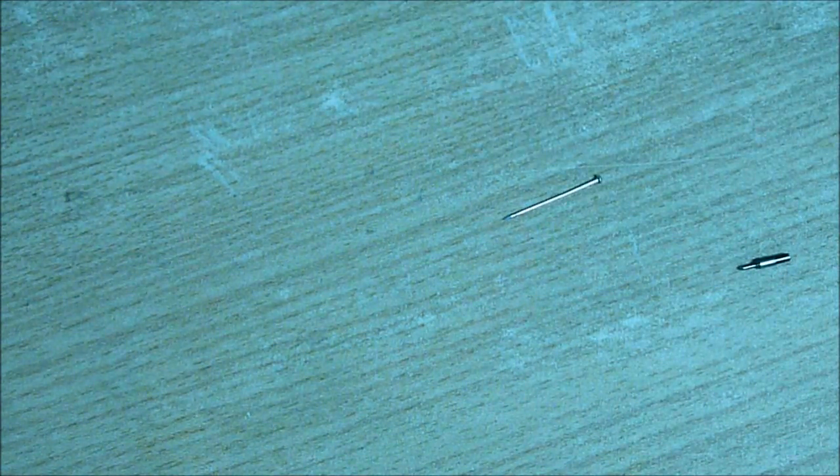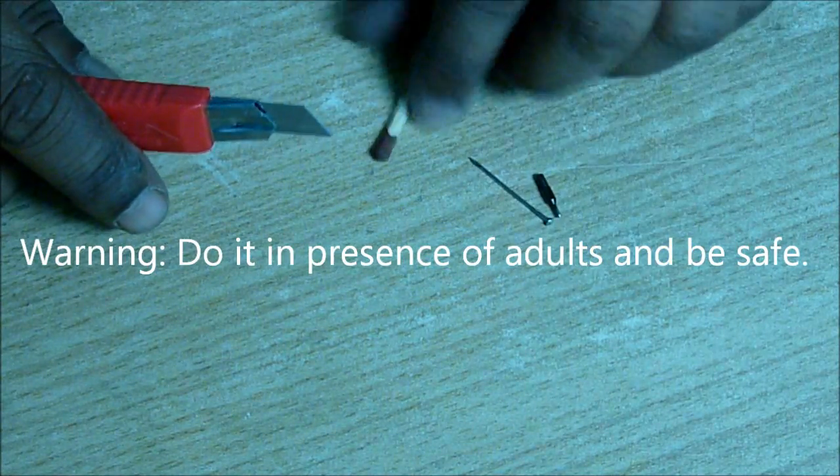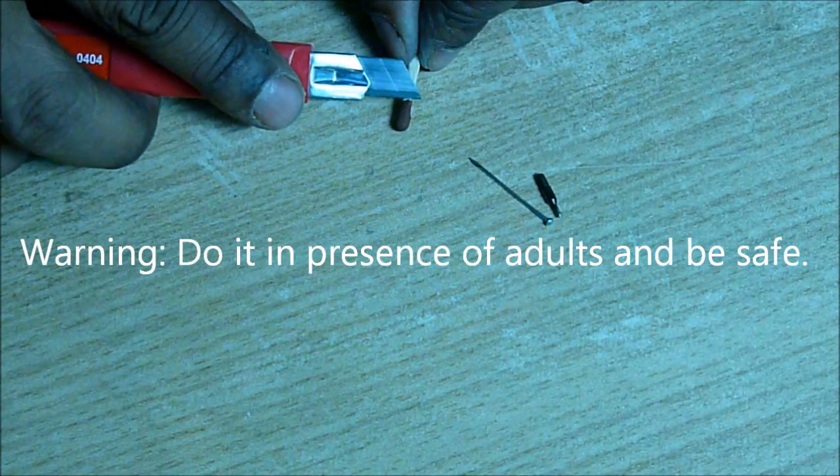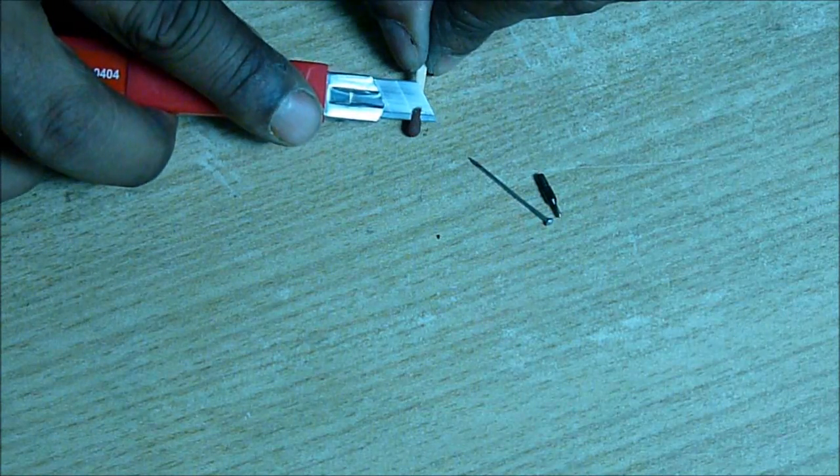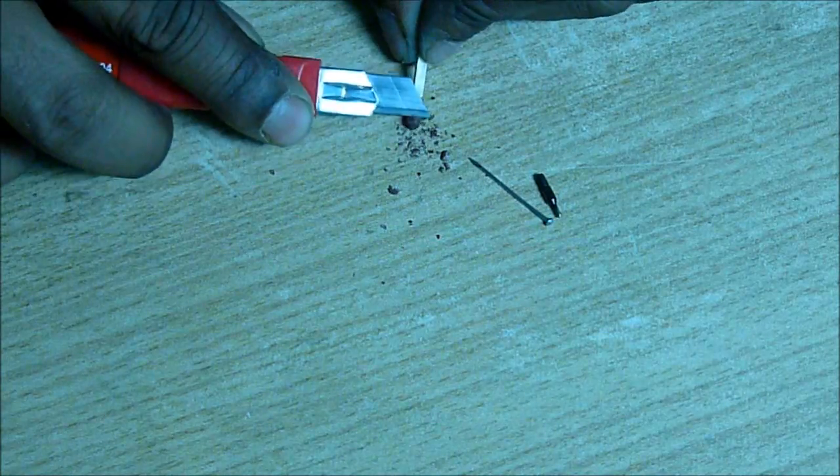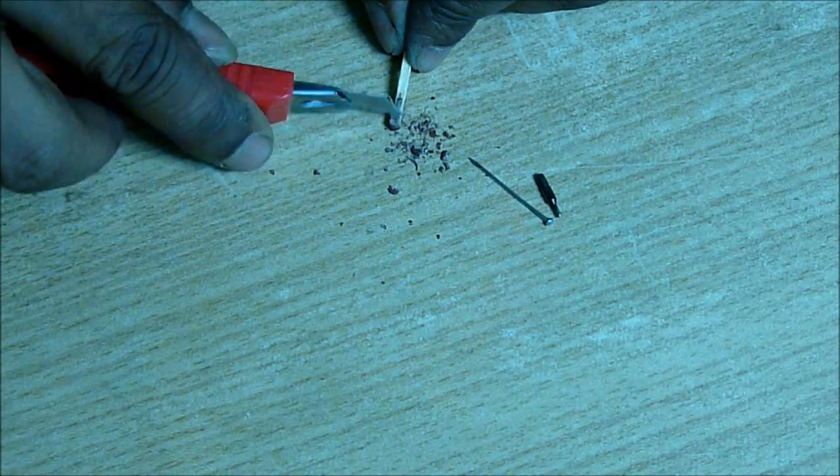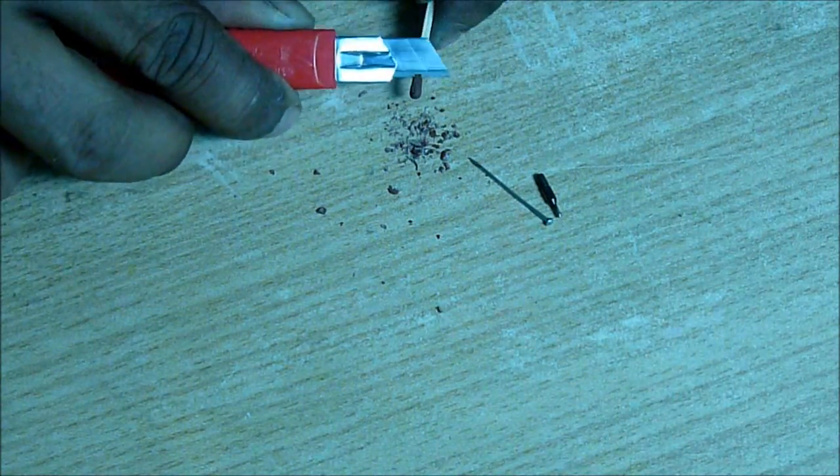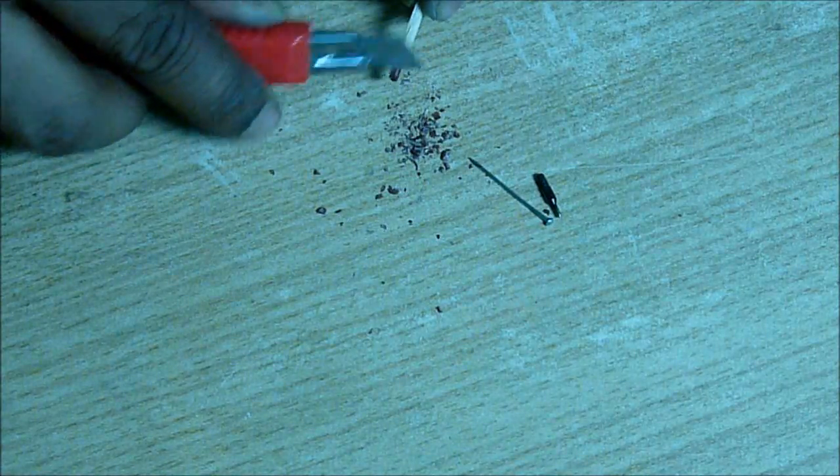Now you need a pin and two matchsticks. The head of the matchsticks is made of sulfur and glass powder. Just scratch using a knife. Scratch carefully, don't scratch the wood out, only the sulfur. Take it out.